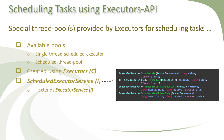All four methods accept only a delay for specifying the time when the task should be executed — no exact time is allowed to be specified. This is in contrast to the threads API where you can specify either the exact time or the delay for scheduling tasks.